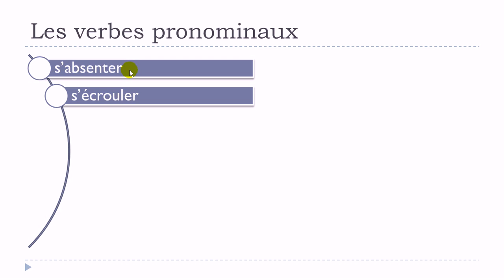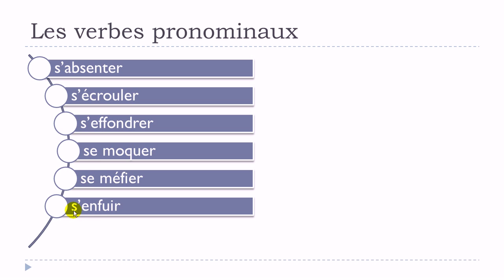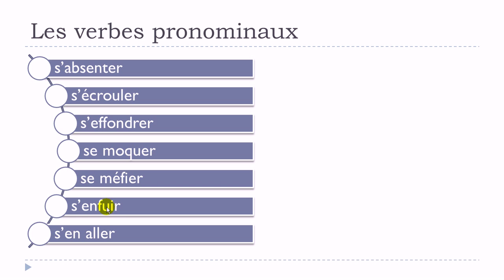A few examples: s'absenter, s'écrouler, s'effondrer, se moquer, se méfier, s'enfuir, s'en aller. In all these cases, these verbs exist only with se before them — pour la forme pronominale.